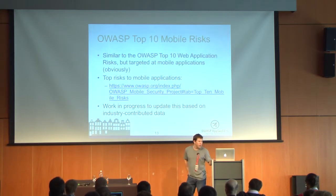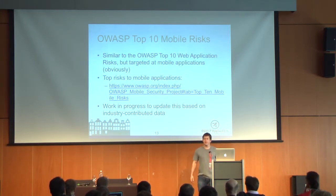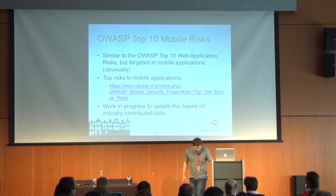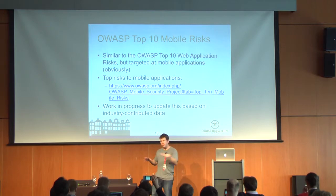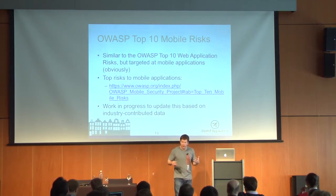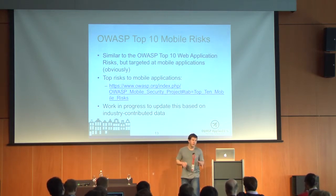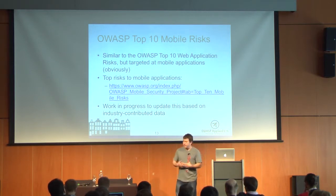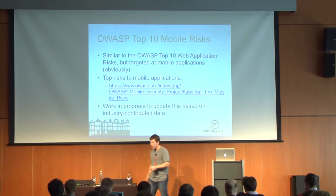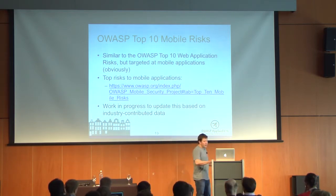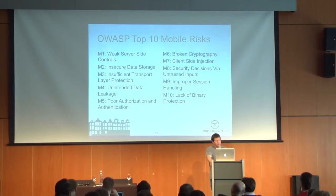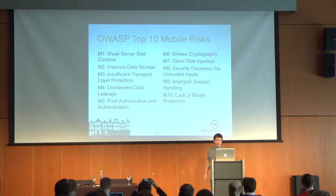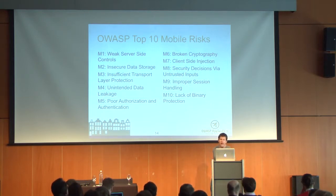If we look at the OWASP Mobile Top 10 — for folks who may not be familiar, there's the OWASP Top 10 web risks like SQL injection and cross-site scripting. The OWASP Mobile Top 10 is basically the same list focused on mobile application systems. It's a great tool to give developers basic information about mobile application security and a great starting point. The list includes: weak server-side controls, insecure data storage, insufficient transport layer protection, unintended data leakage, poor authorization and authentication, broken crypto, client-side injection, security decisions via untrusted inputs, improper session handling, and lack of binary protection.